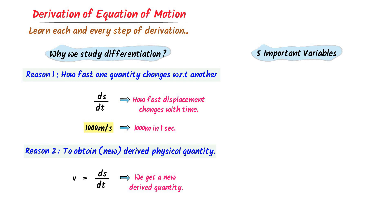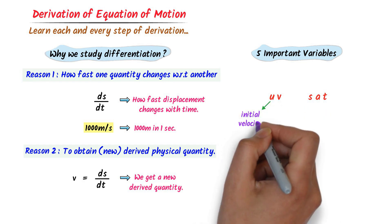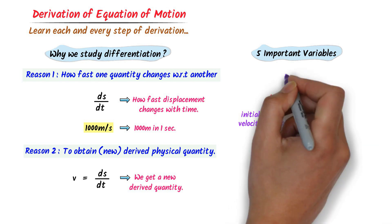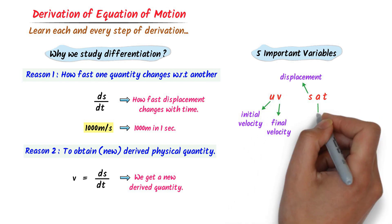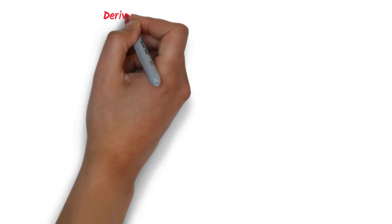Here is a super easy trick — I call it 'UVSaT.' U stands for initial velocity, V stands for final velocity, S stands for displacement, A stands for acceleration, and T stands for time. Note down these five important variables. Now we will derive the first equation of motion.